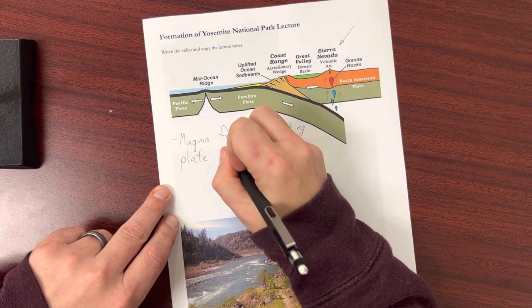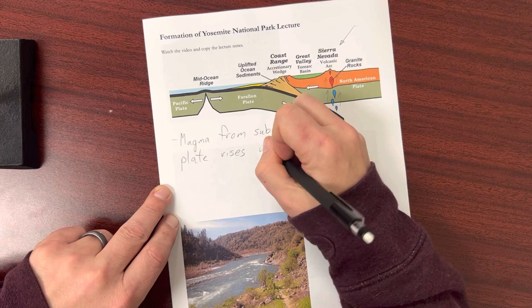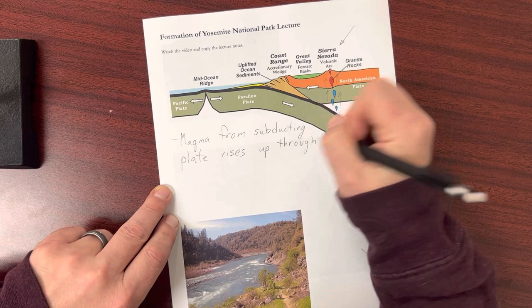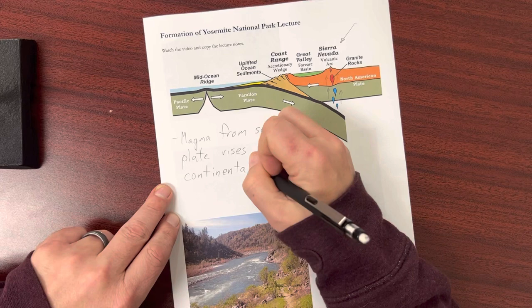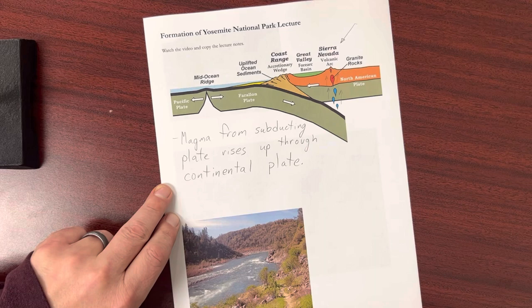The reason this magma starts to rise up is that fluids within the subducting plate change the chemistry of some of that melted rock — some of that magma — which allows it to then rise up through this continental plate. This is the plate that makes up the land that we think of as North America.